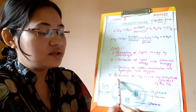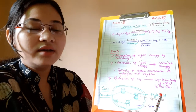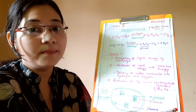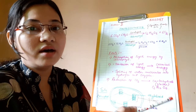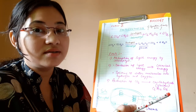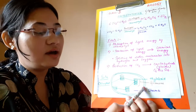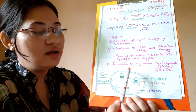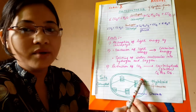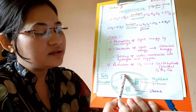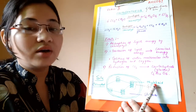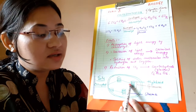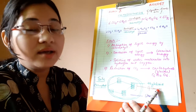Photosynthesis takes place in the leaves. The leaves have mesophyll cells in them, and these mesophyll cells are rich in chloroplastids. Here I have drawn the diagram of a chloroplastid. In this chloroplastid, you can see the outer membrane, inner membrane, and some coin-like or sac-like structures called thylakoids. These thylakoids form a stack-like structure collectively called granum.